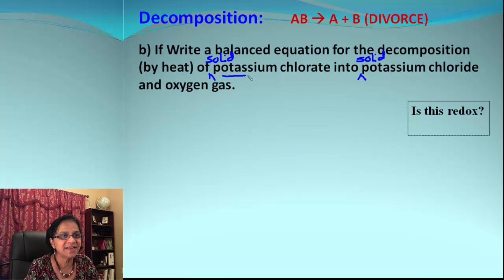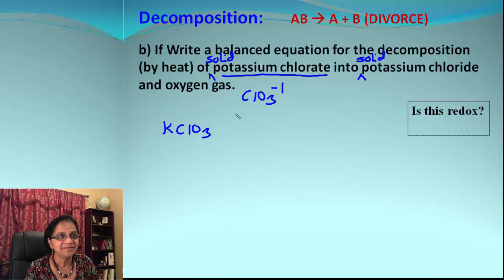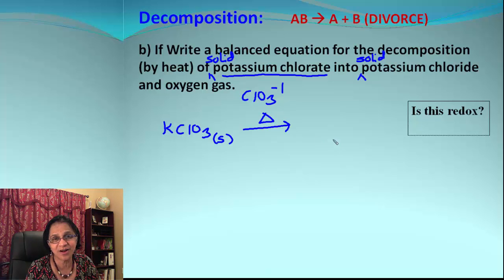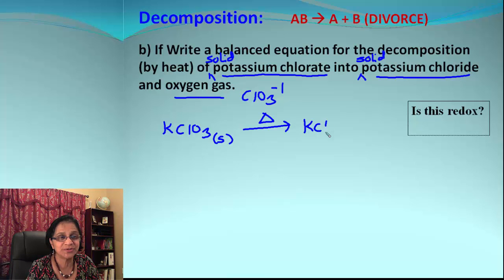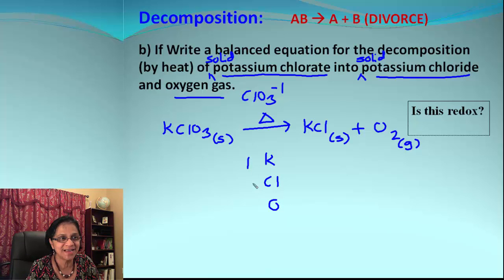Let's take one more example of decomposition. We are heating solid potassium chlorate. Potassium is K, and chlorate is ClO₃⁻, so potassium chlorate is KClO₃, given as solid. Heat is indicated by a triangle on the arrow. The products are potassium chloride, KCl (solid), and oxygen gas, O₂ — remember oxygen is diatomic.